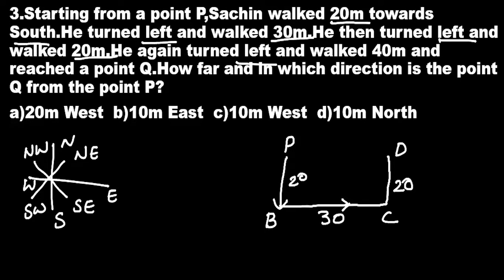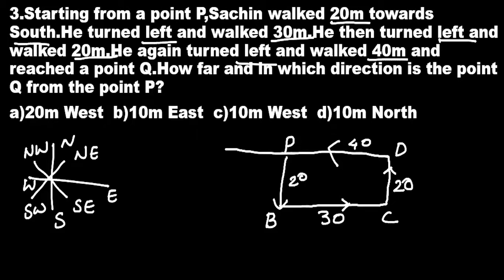He again turned left and walked 40 meters from D. He again turns left and walked 40 meters, and let this point be Q. We have to find out the distance between the initial point and final point, and also the direction from the starting point.